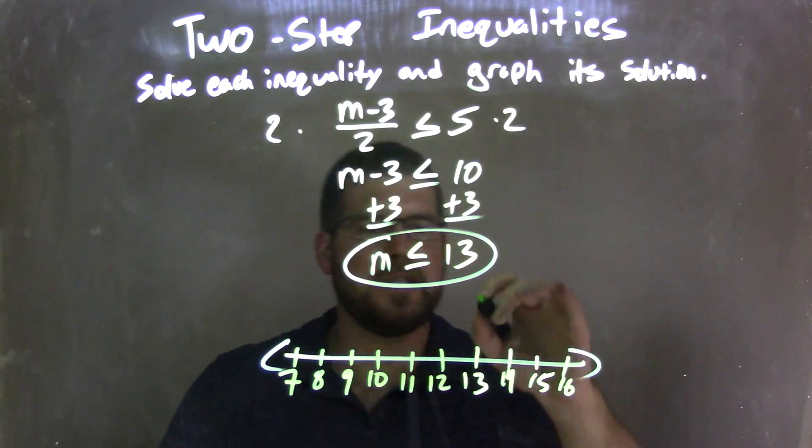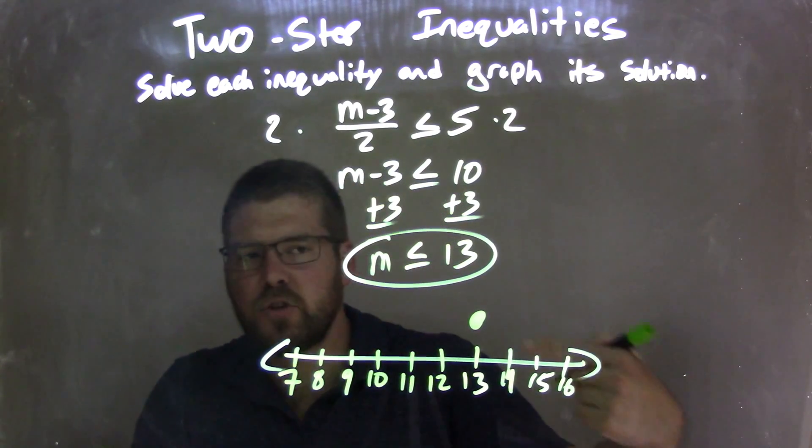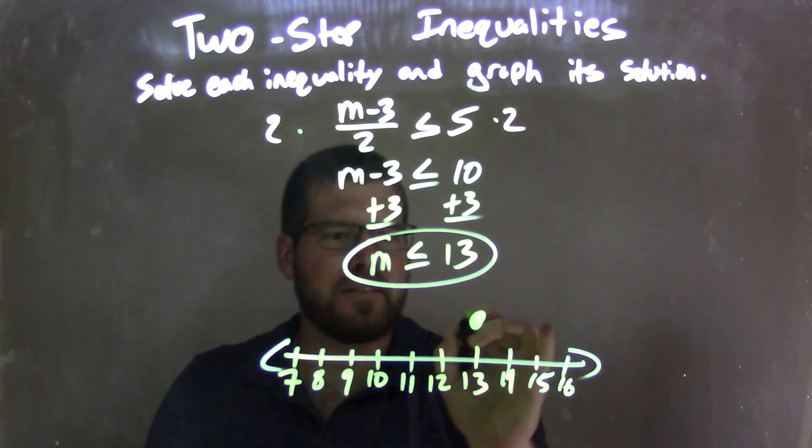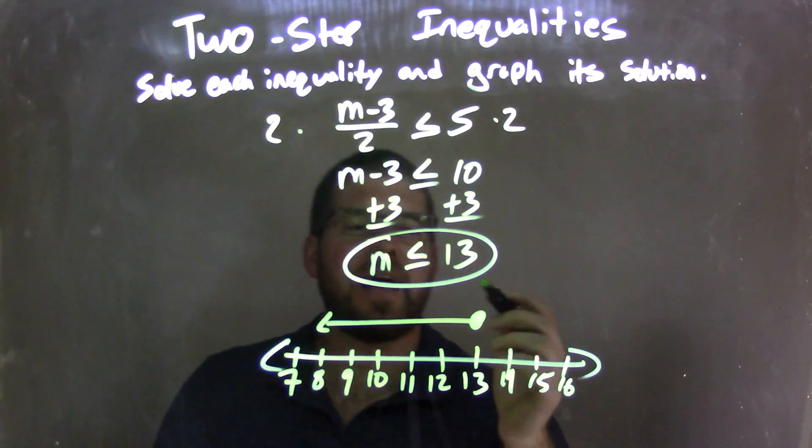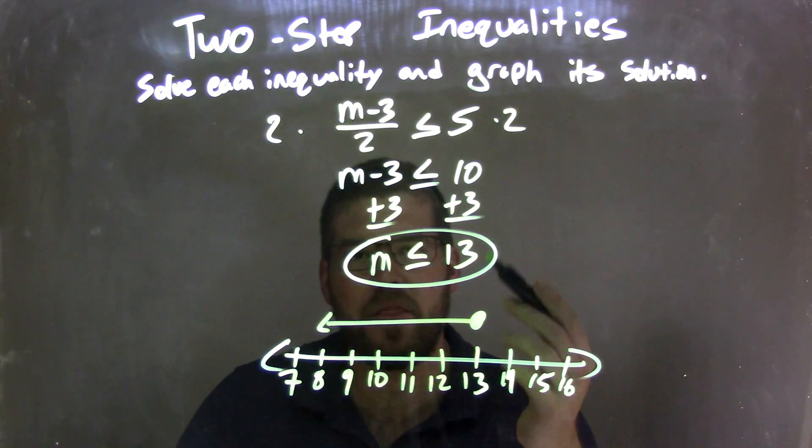Well, since m can equal 13, I'm going to put a closed circle right there at 13. And then we need to shade to the left because we said m is less than that 13. So now I have a graph that represents that m is less than or equal to positive 13.